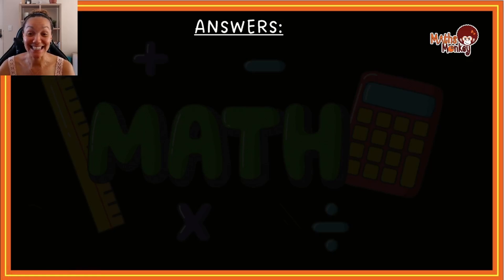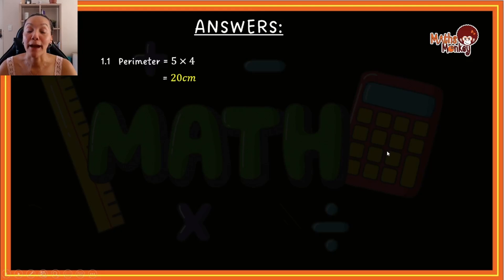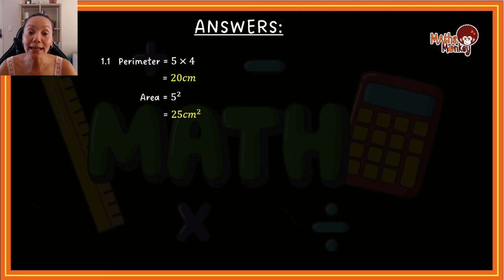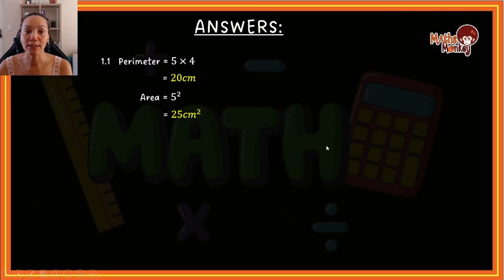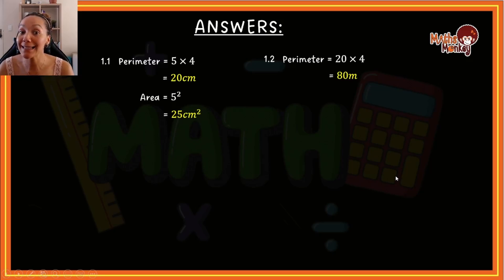Let's look at the answers. For the first one, the perimeter is 5 multiplied by 4 which gives 20 centimeters, and the area is 5 squared which equals 25 centimeters squared. Award yourself a mark for the correct formula, the right answer, and the correct unit. For question 1.2, the perimeter was 20 times 4 which is 80 meters, and the area was 20 to the power of 2, giving 400 meters squared.